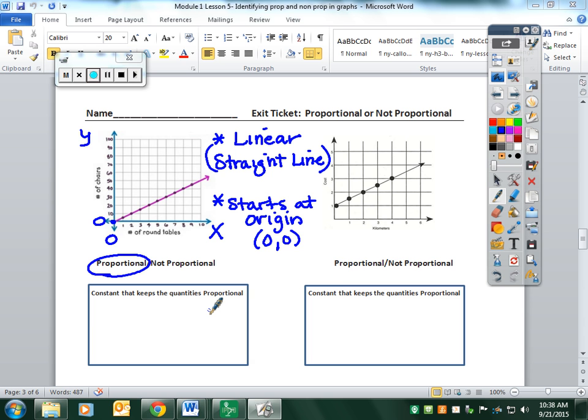Now, if we have a proportional relationship, we can find the constant that keeps the quantities proportional. Anytime you see they're proportional, you want to find y over x.